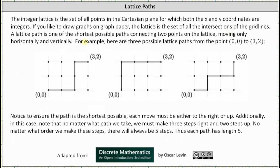A lattice path is one of the shortest possible paths connecting two points on the lattice, moving only horizontally and vertically. For example, here are three possible lattice paths from the point (0,0) to the point (3,2).